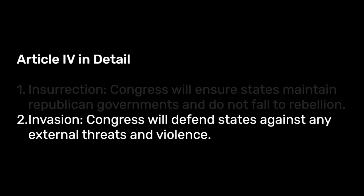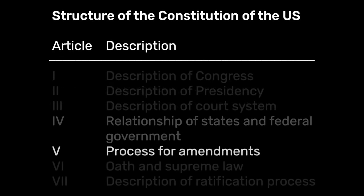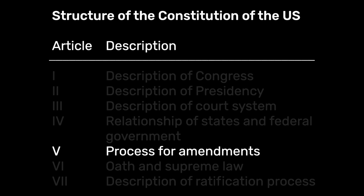Also related to that, the federal government has the duty to protect each state against insurrection, as discussed, but also against invasion. Article IV is how Congress will help the states. Article V is how to amend the Constitution — it takes two-thirds of both houses and then three-quarters of the states to amend it. Or there's a procedure to have a second Constitutional Convention, but that's never happened.